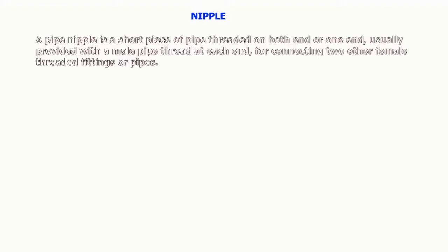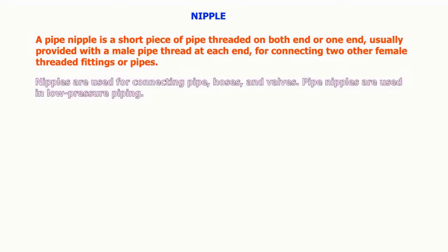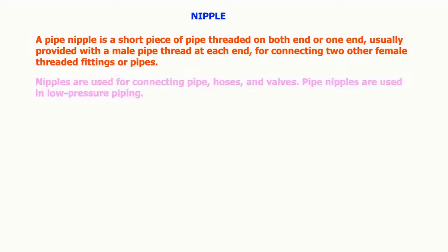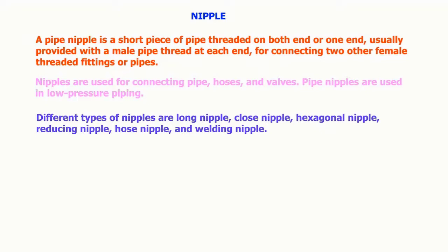A pipe nipple is a short piece of pipe threaded on both ends or one end, usually provided with a male pipe thread at each end for connecting to other female threaded fittings or pipes. Nipples are used for connecting pipe hoses and valves. Pipe nipples are used in low pressure piping. Different types of nipples are long nipple, close nipple, hexagonal nipple, reducing nipple, hose nipple, and welding nipple.